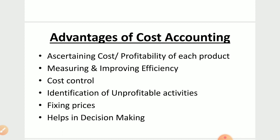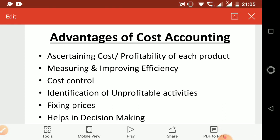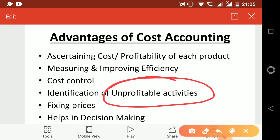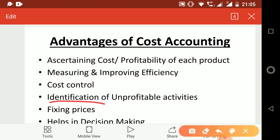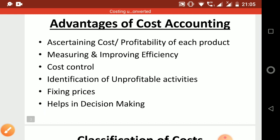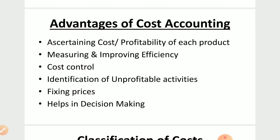Next is identification of unprofitable activities — unprofitable means where profit is not generated. Such activities are identified. Next is fixing price, which is very important in cost accounting. For example, if you are making a pen, and the total cost to make a pen is 10 rupees, then you cannot sell it for 10 rupees — you would sell it for 12 or 15 rupees maximum.